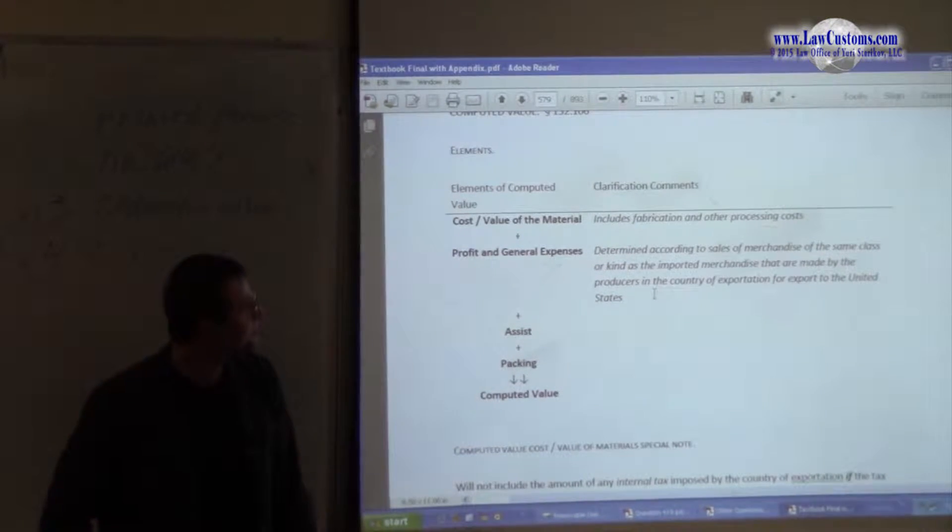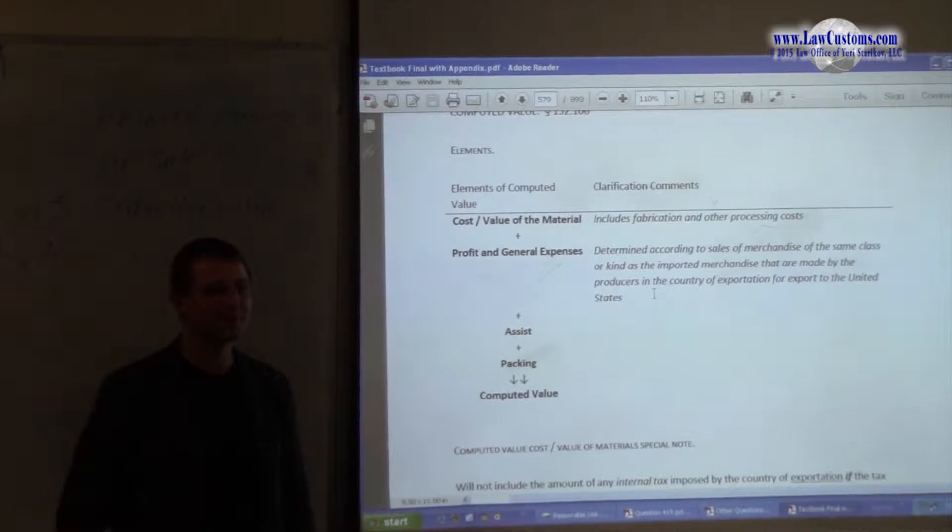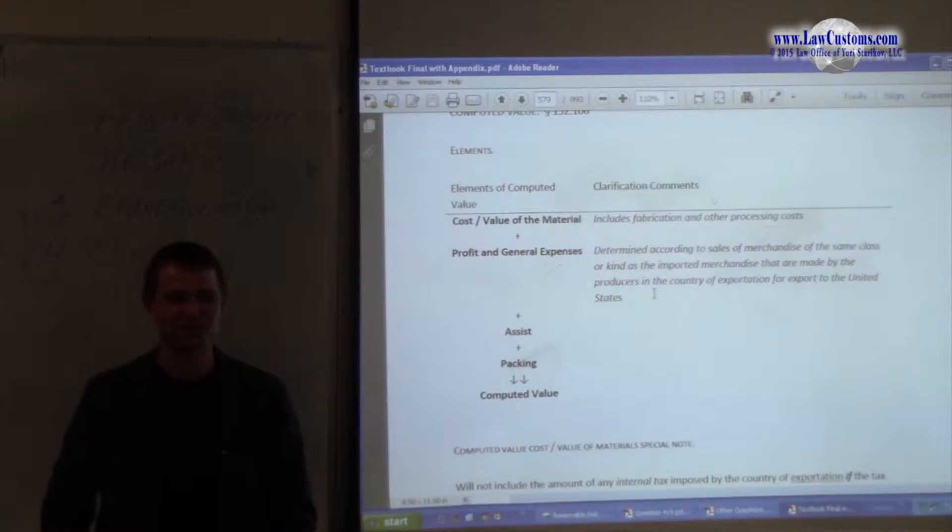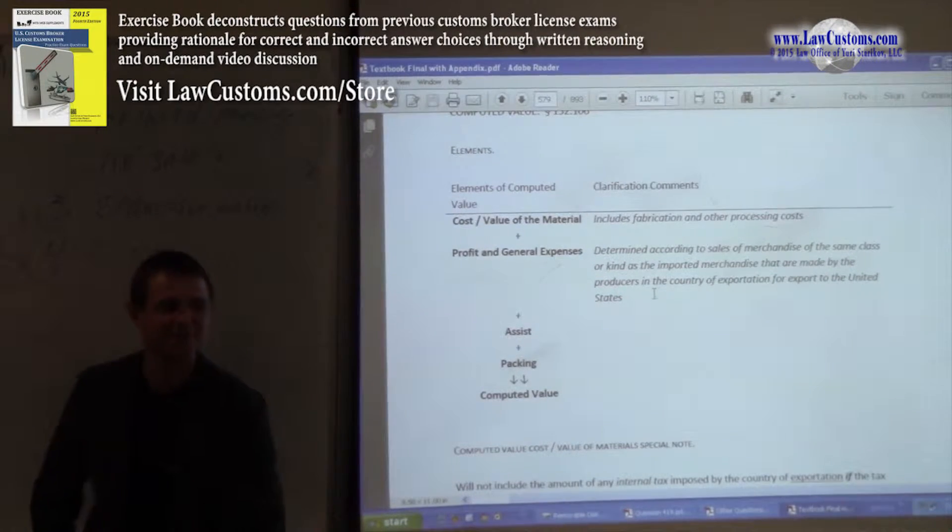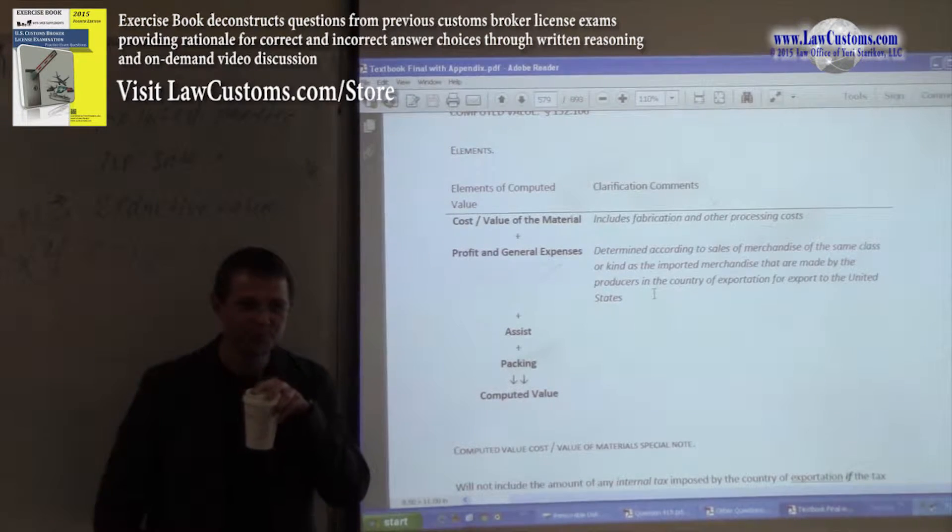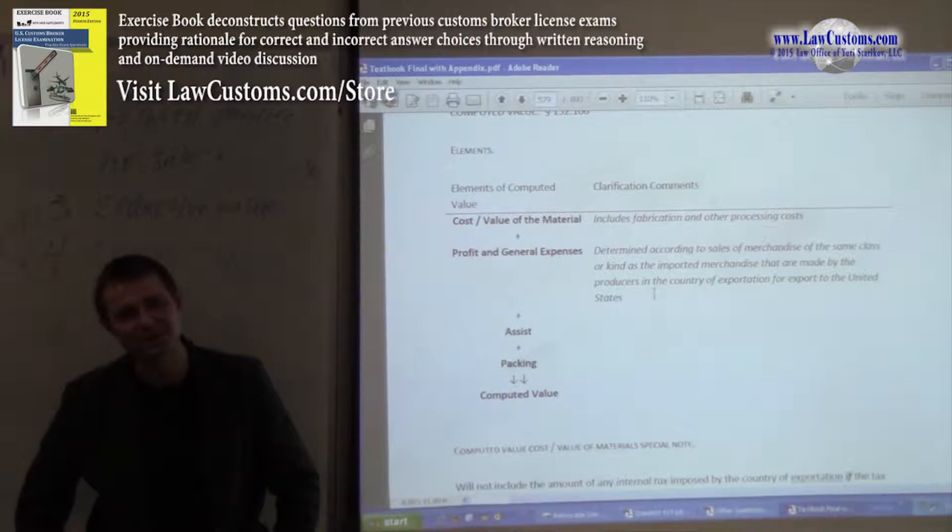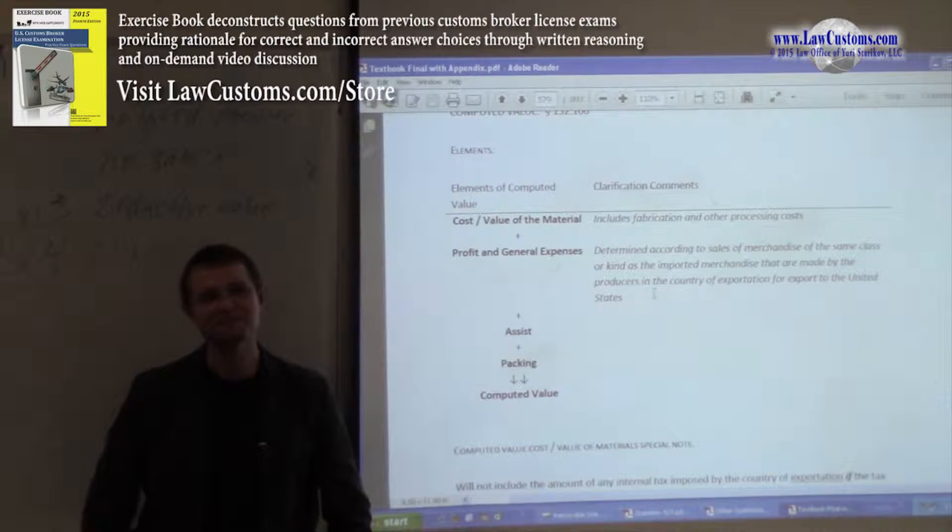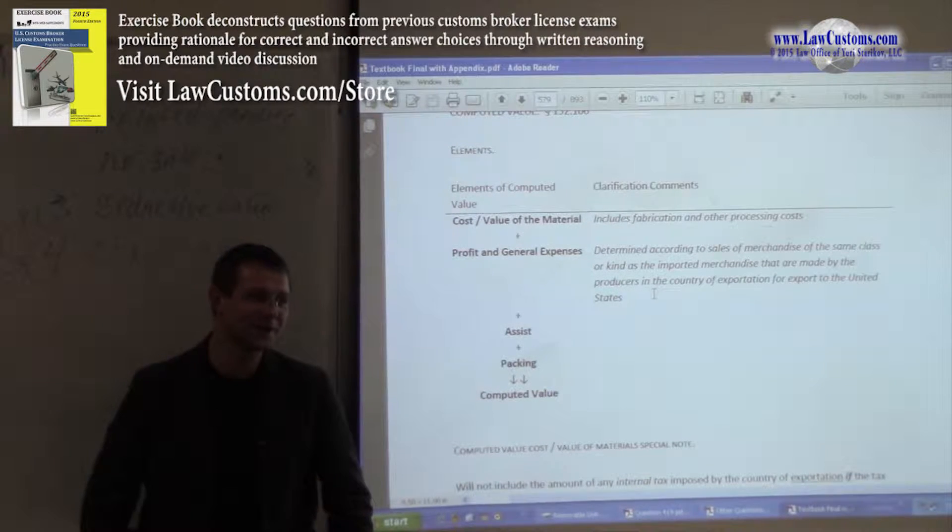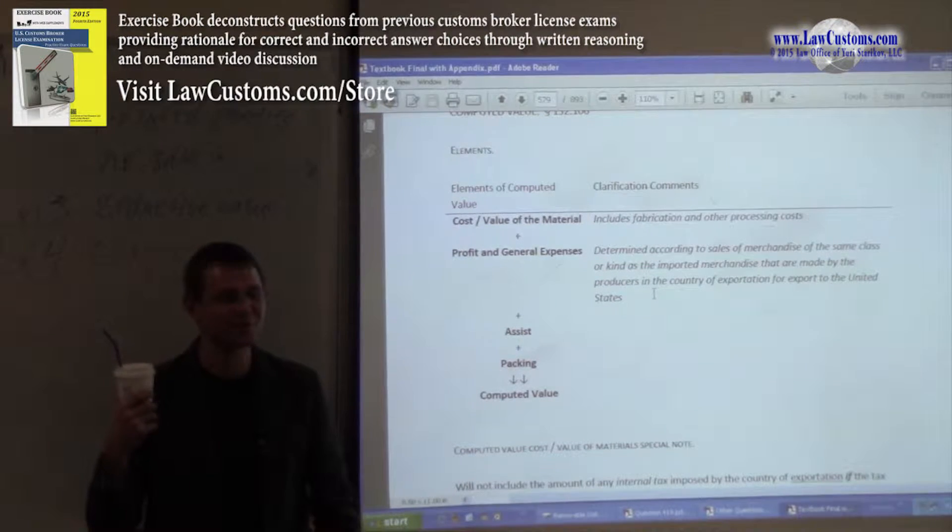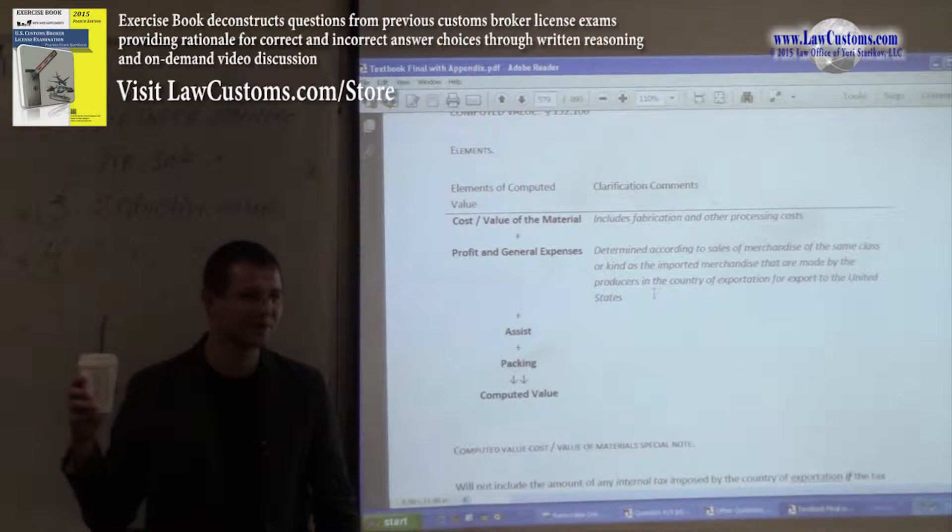And that results in a computed value. This is where the devil lies. Profits and general expenses. So why is this concept so tricky, at least from the perspective of customs? Why do they not like that? Profits and general expenses.